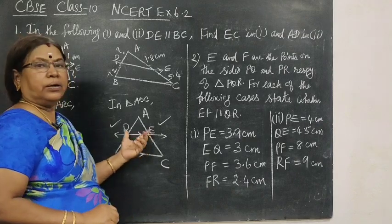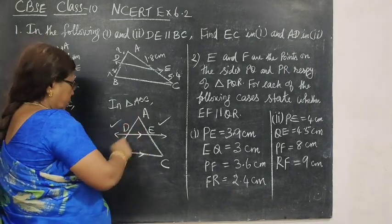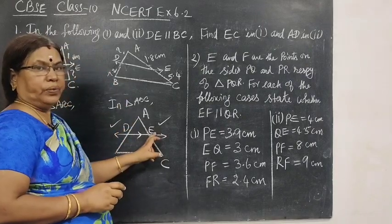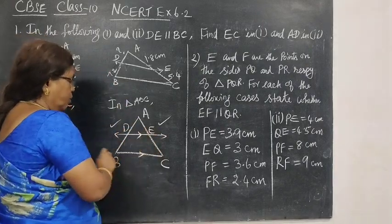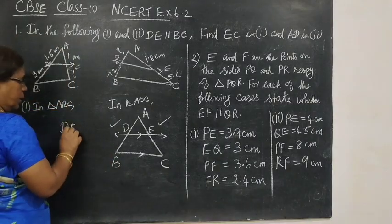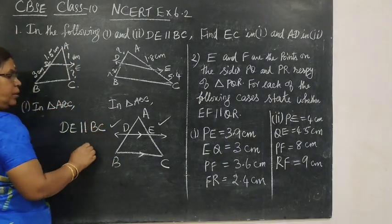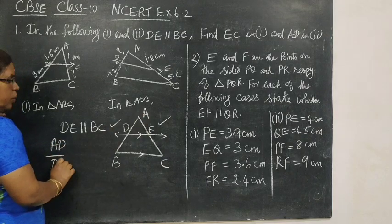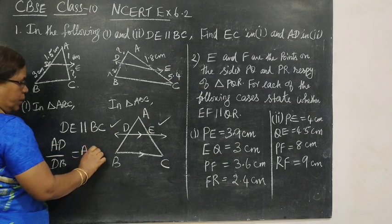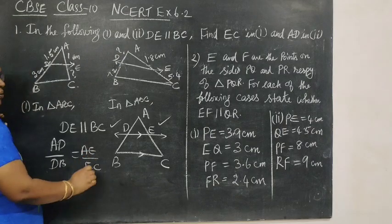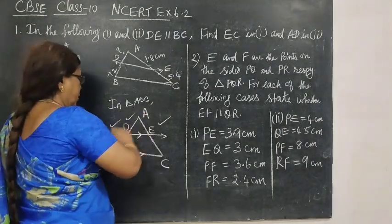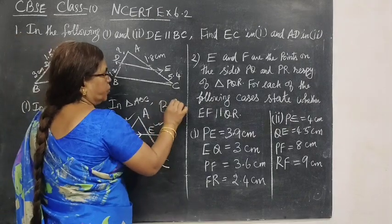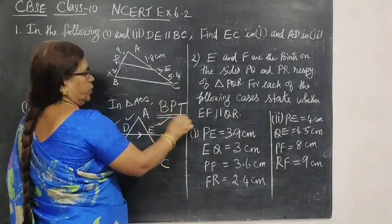The line divides AB and AC in two distinct points, D and E. When DE parallel to BC, AD by DB equal to AE by EC, this is the same ratio. It divides the other two sides in the same ratio, it is basic proportionality theorem, BPT.